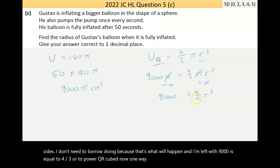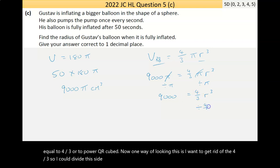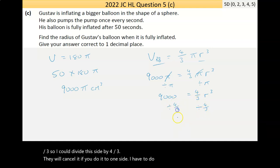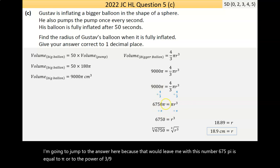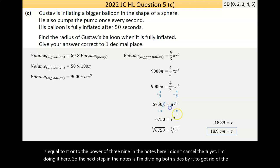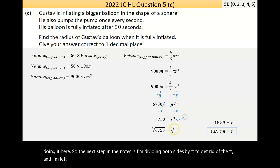I want to get rid of the 4 over 3. I could divide this side by 4 over 3, that will cancel it. If I do it to one side, I have to do it to both. That would leave me with 6750 is equal to r to the power of 3. In the notes here I didn't cancel the pi yet. The next step is I'm dividing both sides by pi to get rid of the pi. I'm left then with 6750 is equal to r to the power of 3.